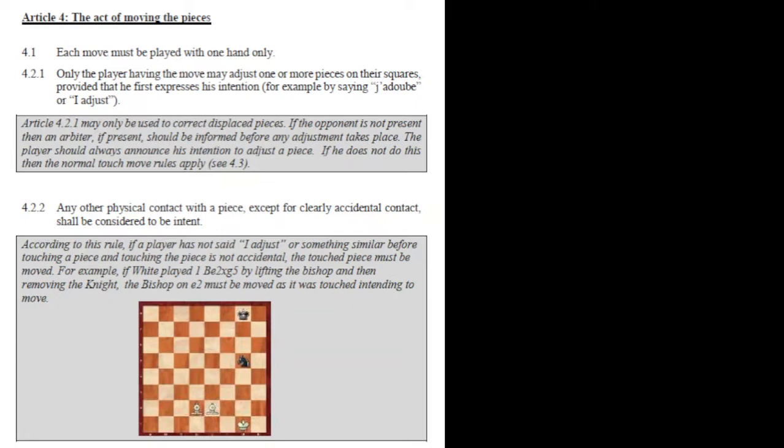So what rules apply? Article 4 applies here — it's in the Arbiter's Manual 2022, and typically it's best to just read the whole article. Article 4 covers the act of moving the pieces. 4.1 states each move must be played with one hand only, so that's not the issue. Then we come to 4.2.1: only the player having the move may adjust one or more pieces on their squares, providing that he first expresses his intention, for example saying 'adjust.' This is not the case here — it's not about adjusting.